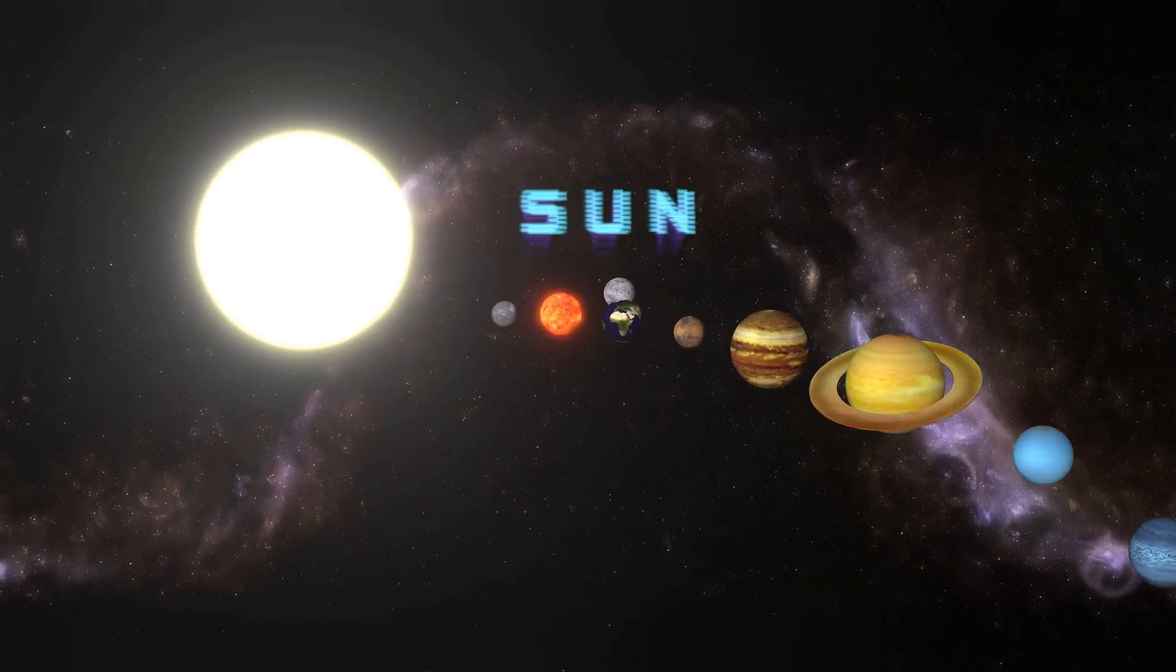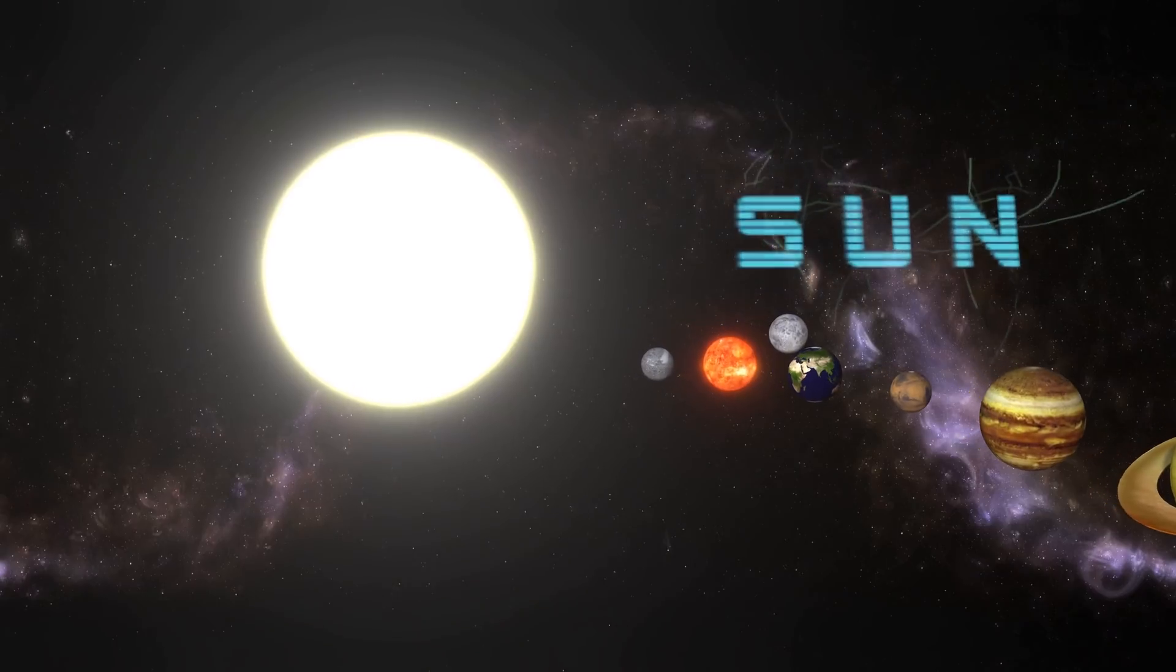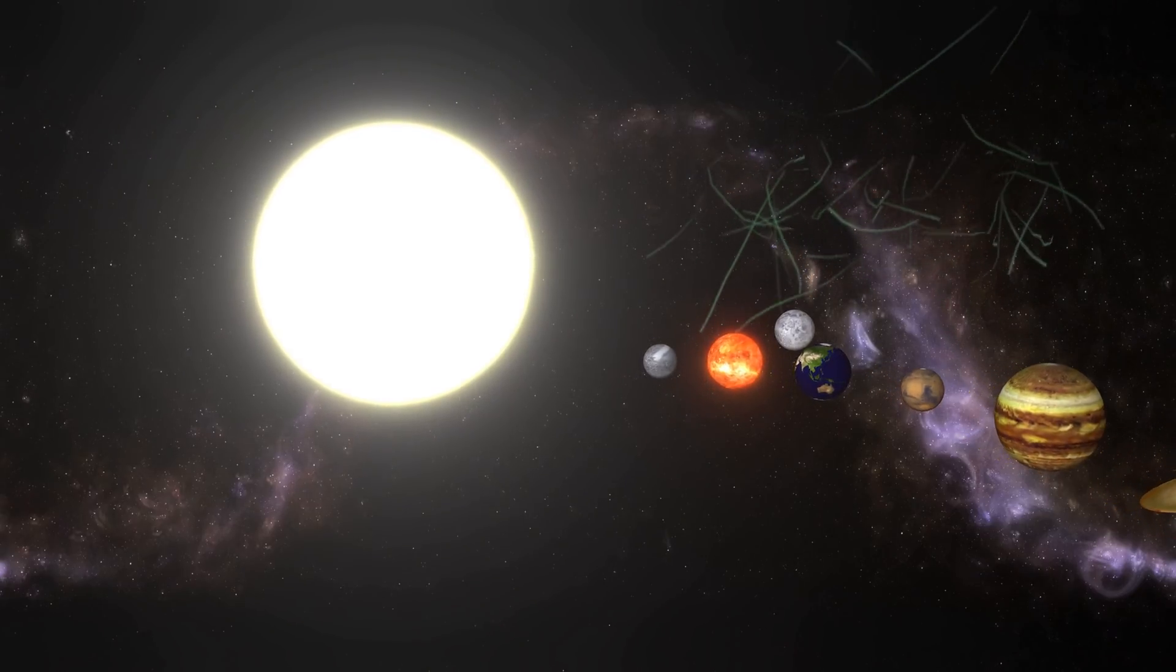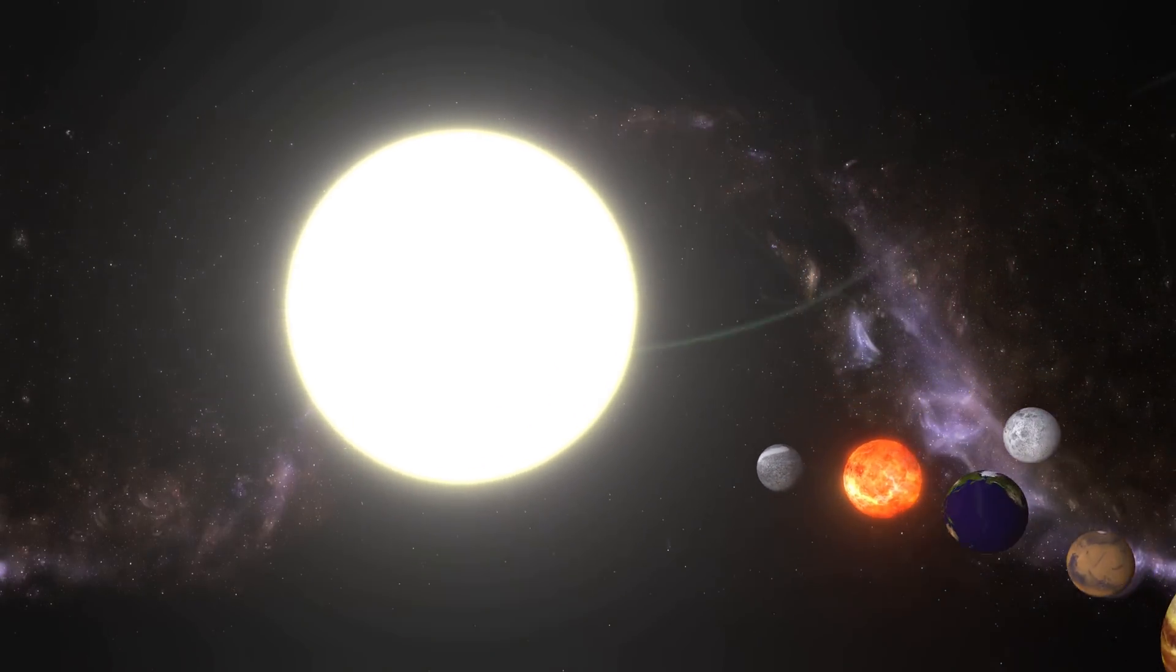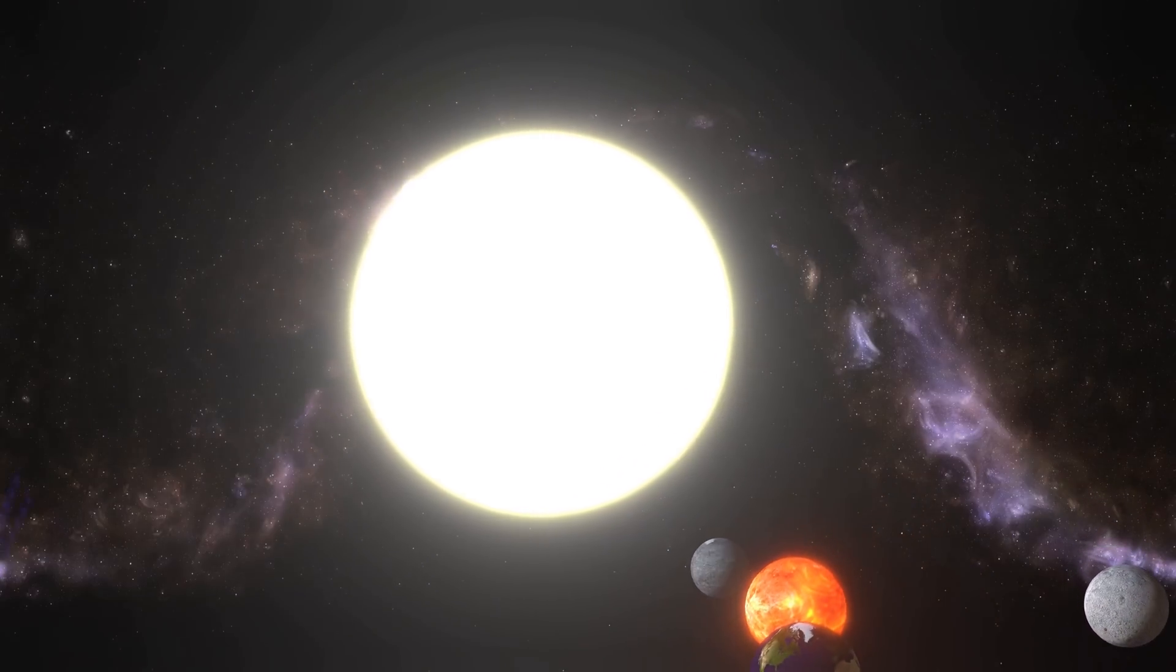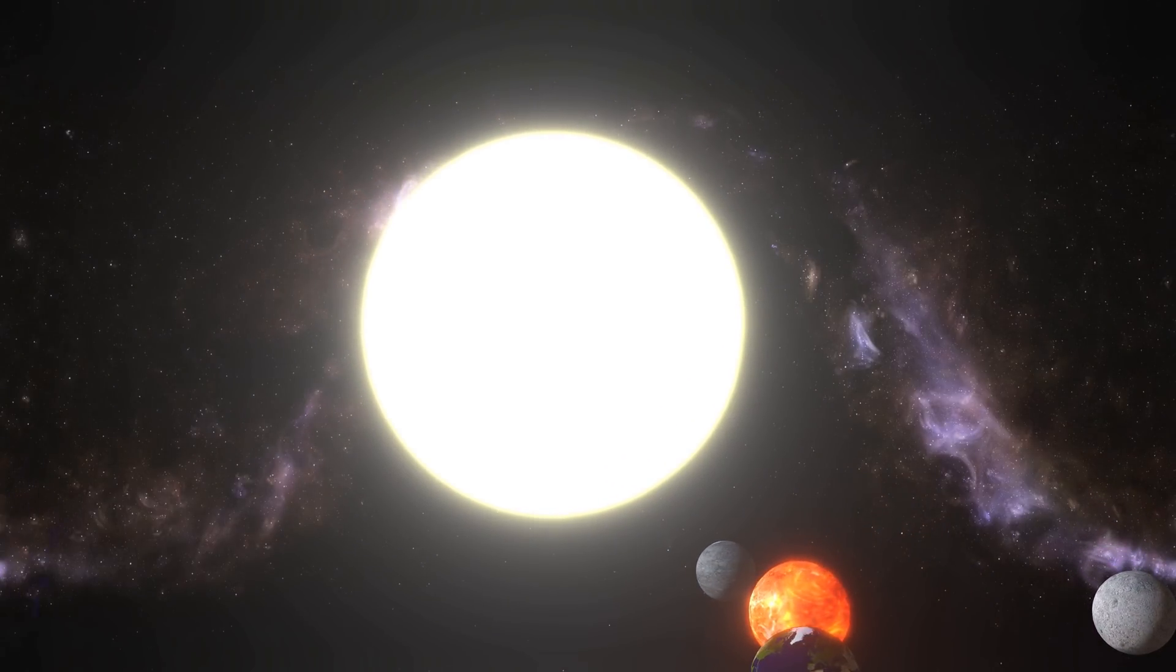The sun, at the heart of our solar system, is a yellow dwarf star, a hot ball of glowing gases. Its gravity holds the solar system together, keeping everything from the biggest planets to the smallest particles of debris in its orbit.